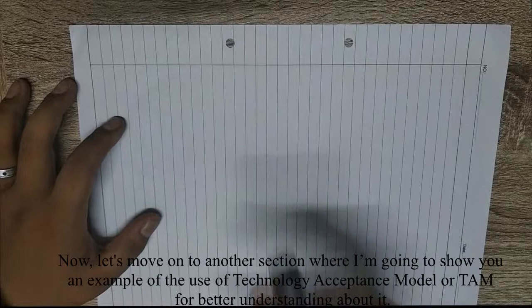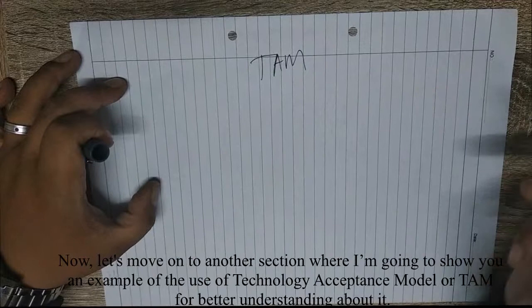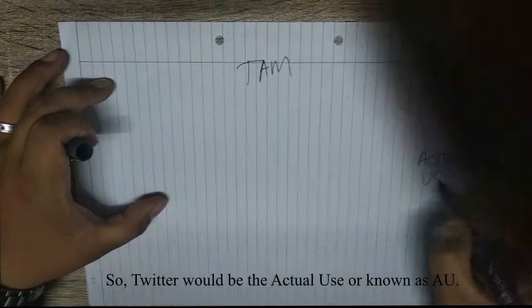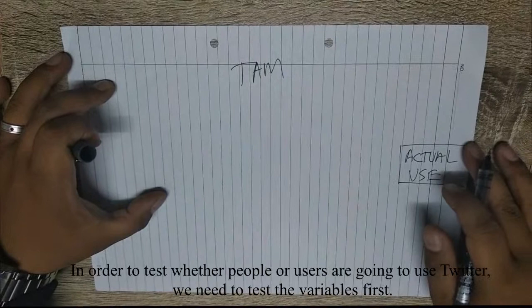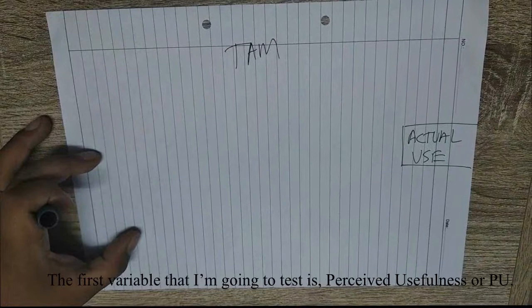Now, let's move on to another section where I'm going to show you an example of the use of the Technology Acceptance Model, or TAM, for better understanding. I'm going to use a social media platform called Twitter as an example. Twitter will be the actual use variable, known as AU. In order to test whether users are going to use Twitter, we need to test the variables first.